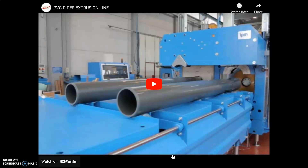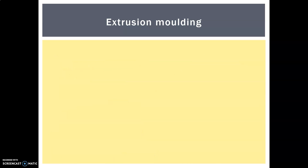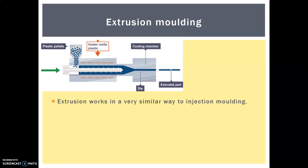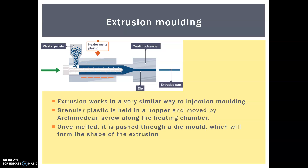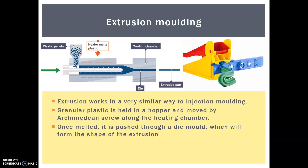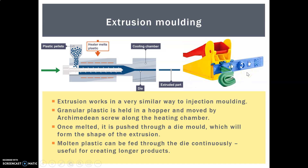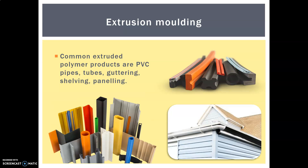Next up is extrusion moulding, which is a lot like injection moulding. The granular plastic is held in a hopper, moved into an Archimedean screw along a heated chamber. Once melted, instead of being pushed into a solid die, it's pushed through a die mould and takes the shape of the extrusion — just like pushing Play-Doh through one of those little toys. The plastic is fed through the die continuously, making it useful for longer products like PVC guttering, PVC pipes, shelving, and panelling.